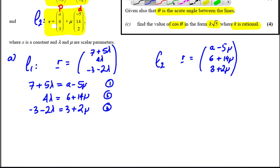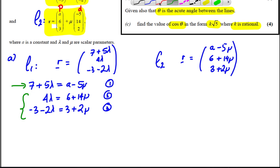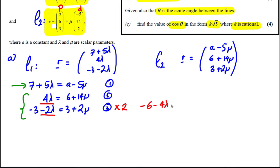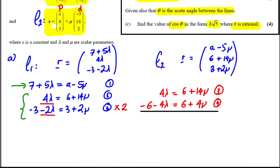There's no point dealing with equation 1 because it contains the unknown 'a', so we use equations 2 and 3. We multiply equation 3 by 2 to get −6 − 4λ = 6 + 4μ. We now have equation 2 (4λ = 6 + 14μ) and the scaled equation 3, and we can add them to eliminate the λ terms.